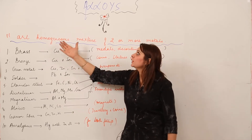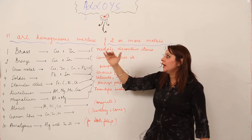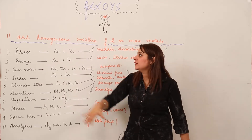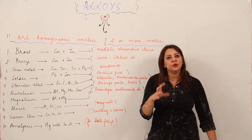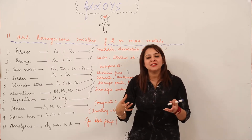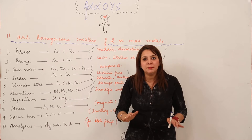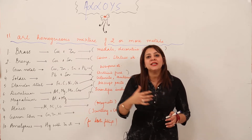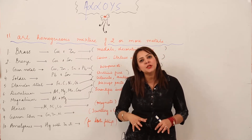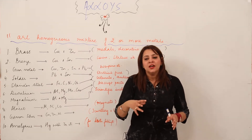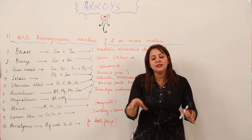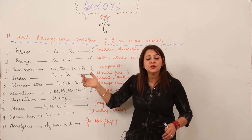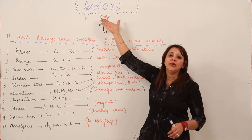Now let's see alloys. What are alloys? Alloys are homogeneous mixtures of two or more metals. Homogeneous mixture means two or more substances are simply mixed in any ratio, not chemically combined. Out of the two categories of mixtures — homogeneous and heterogeneous — when components are thoroughly mixed with definite properties and we cannot see different phases, that is a homogeneous mixture. An example of a homogeneous mixture is alloys.